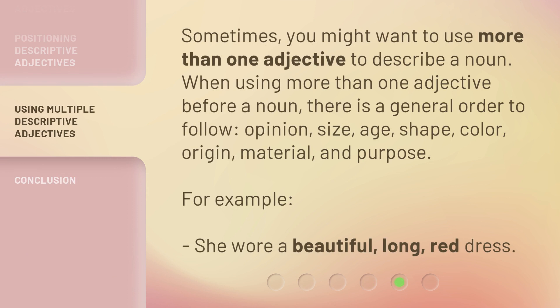Sometimes you might want to use more than one adjective to describe a noun. When using more than one adjective before a noun, there is a general order to follow: opinion, size, age, shape, color, origin, material, and purpose. For example: 'She wore a beautiful, long, red dress.'